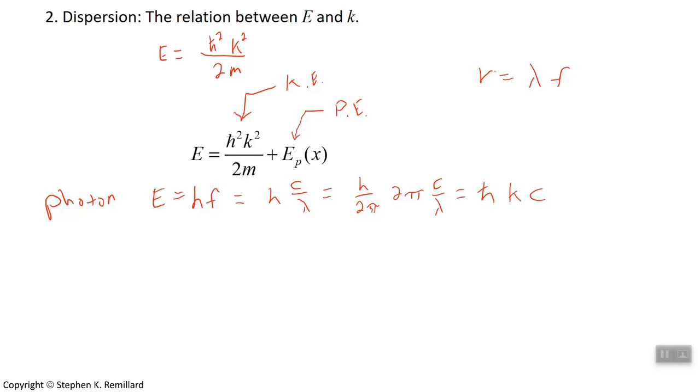Divide H by 2π, and then multiply 2πC over λ. Because then I say, H over 2π is ℏ. 2π over λ is K. The dispersion relation of a photon is linear in K. Energy is linear in K. It's not quadratic like it is for a free electron. The dispersion relation for a photon is linear.